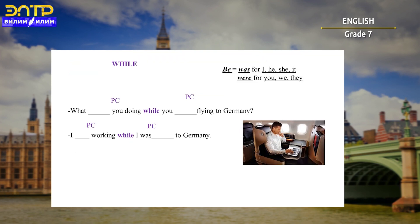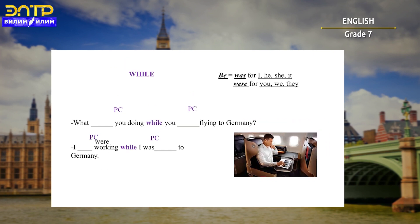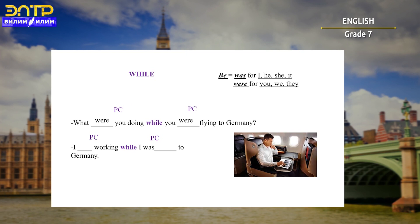Now let's exercise a little with the conjunction 'while'. Here is a short conversation — please guess which verbs should go in the gaps. The first gap is filled with 'were': 'What were you doing while you were flying to Germany?' — this is a question. And the answer: 'I was working while I was flying to Germany.'